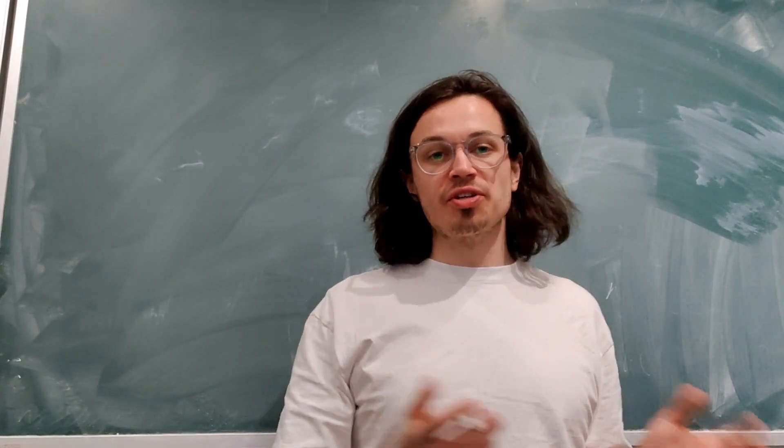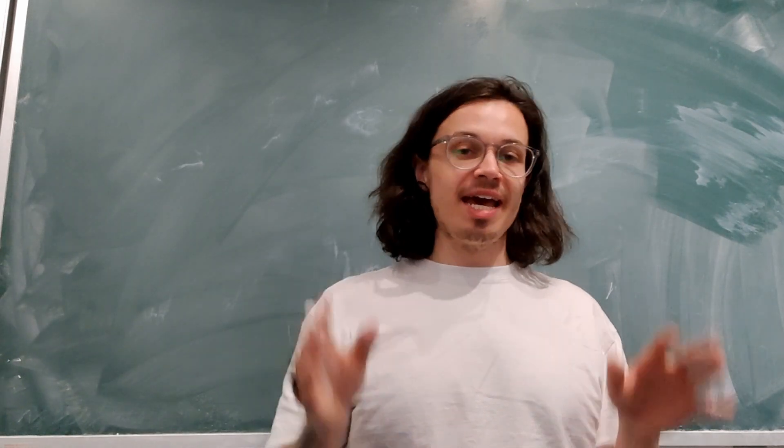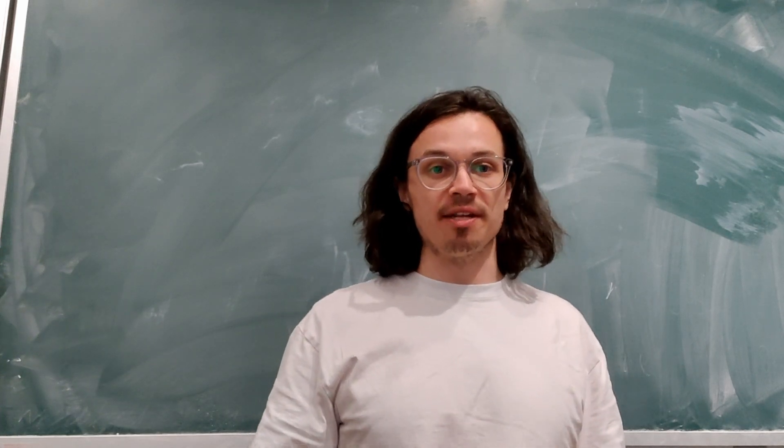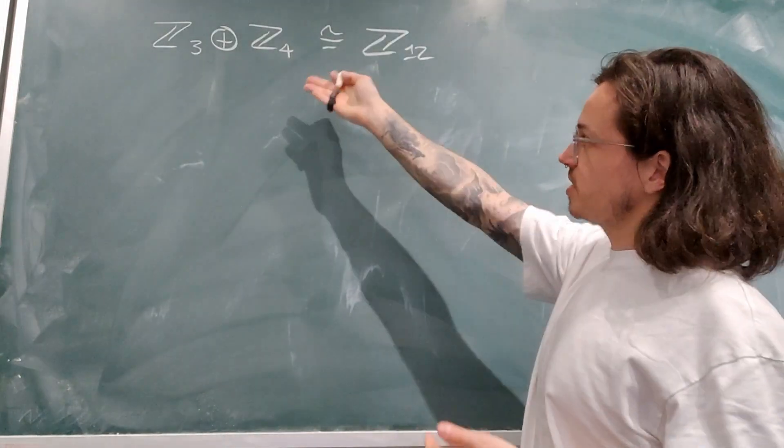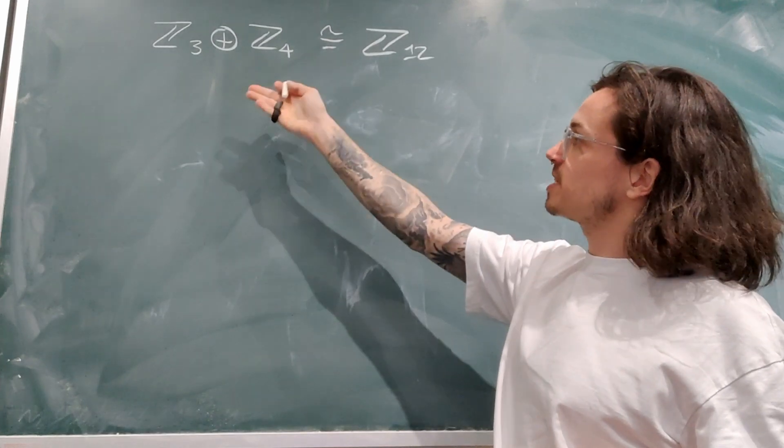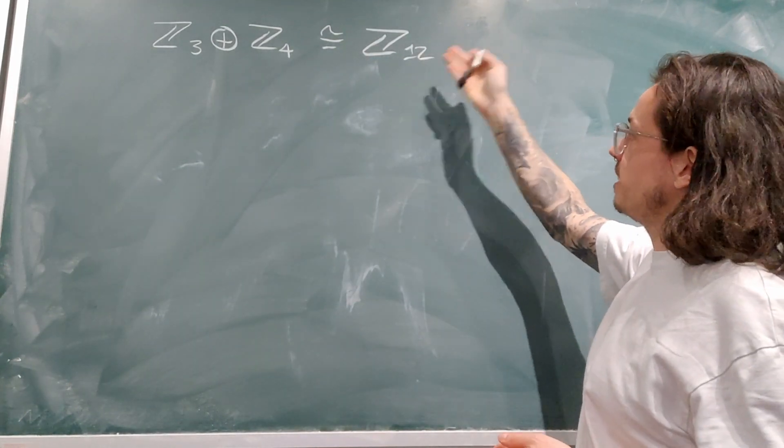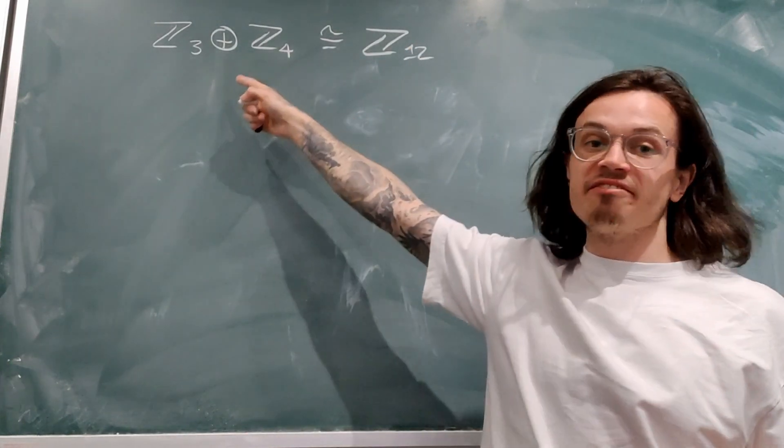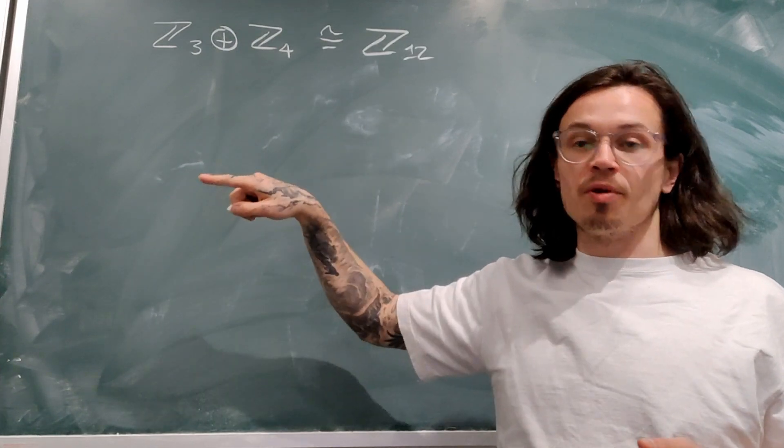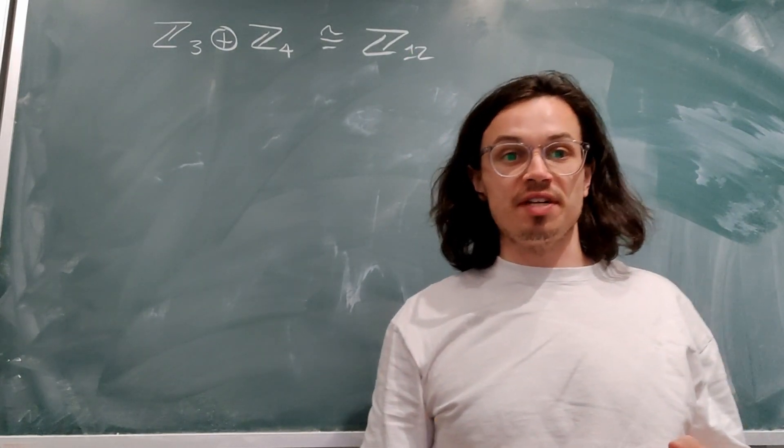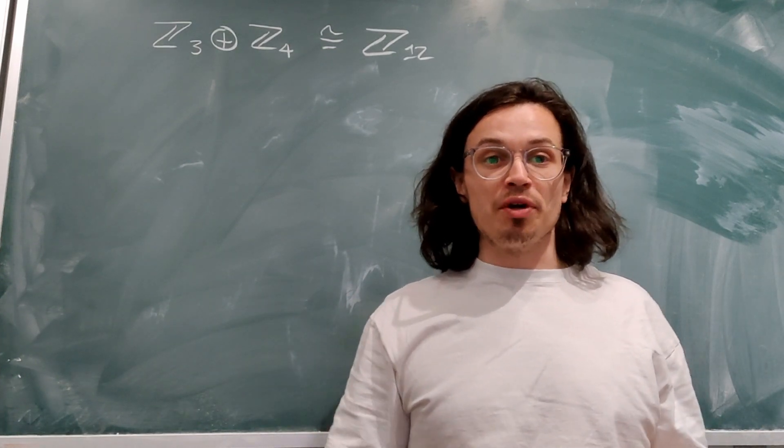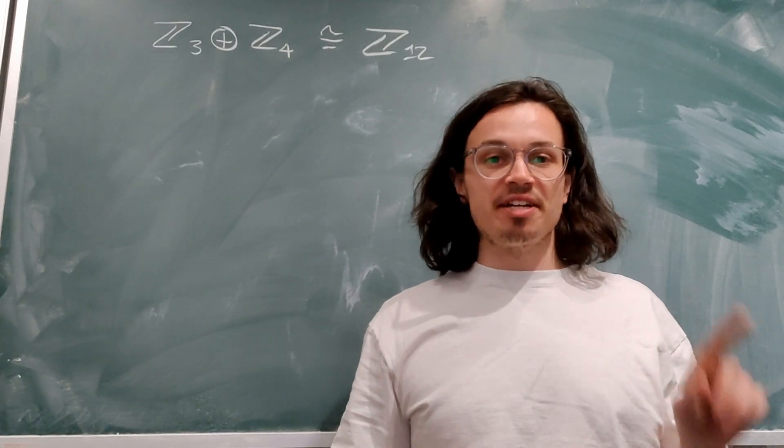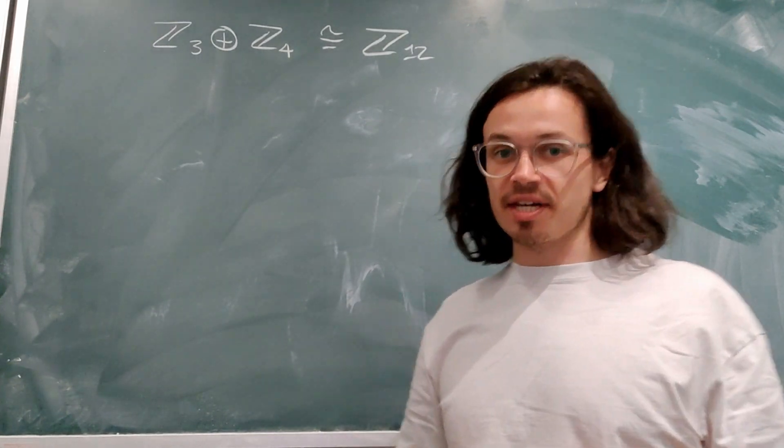Now what I'm going to do is define two different groups for you, which are both going to be cyclic, and they also have the same number of elements inside them. The two groups that we're going to be considering is the one on the left, which corresponds to pairs of elements inside Z mod 3 and Z mod 4, and then the other one is going to be Z mod 12. These both have 12 elements inside them, and indeed they're both cyclic. So this means that they're necessarily isomorphic to each other.